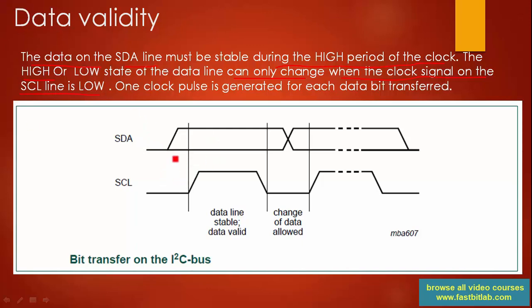For example, if you look at this waveform, this is SCL and this is SDA. You can see that the data is stable when the clock is high. Data is only changing here—this is a change of data. Change means either from 0 to 1 or 1 to 0, and that change should happen only when the clock is low.